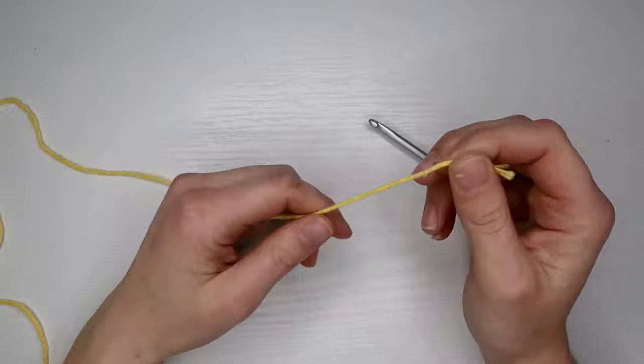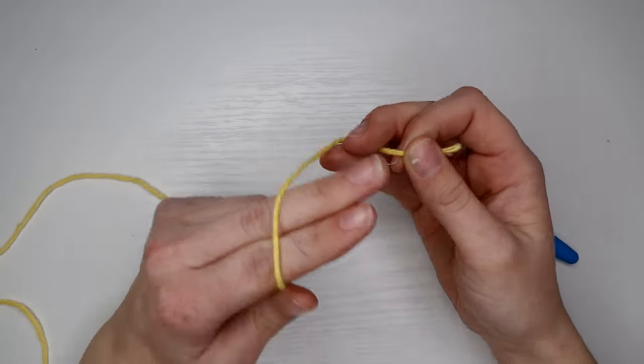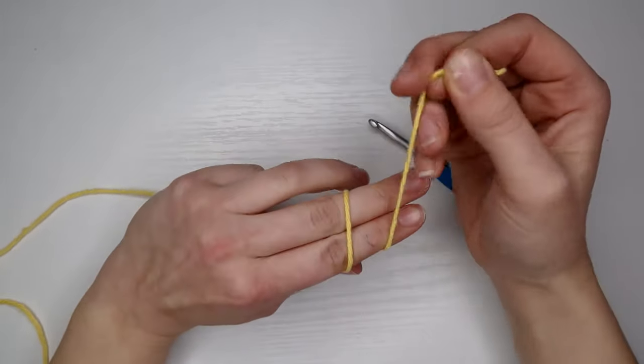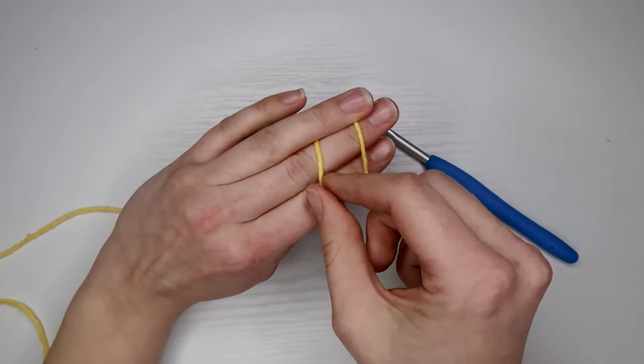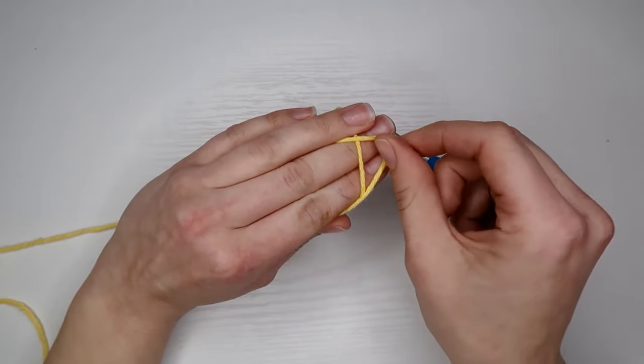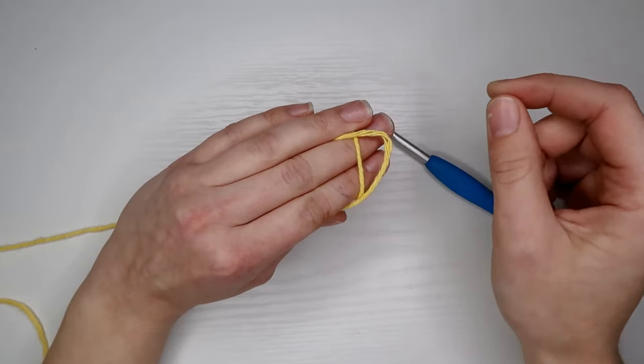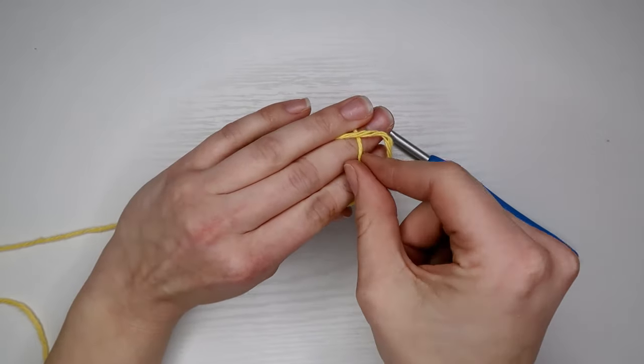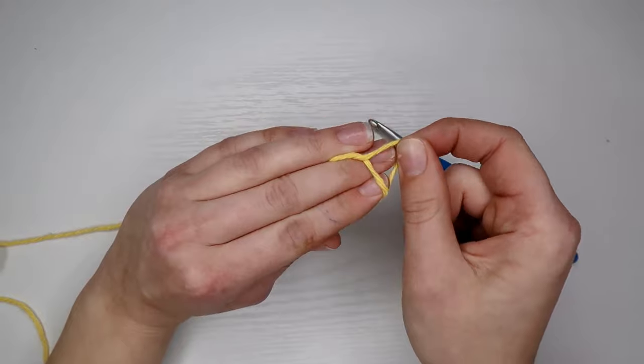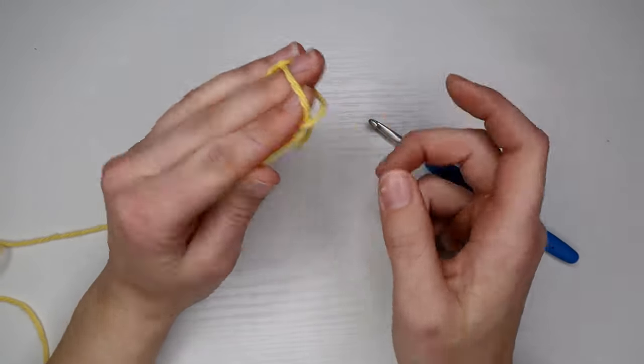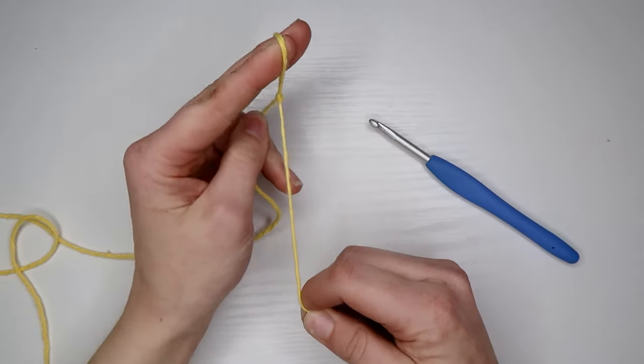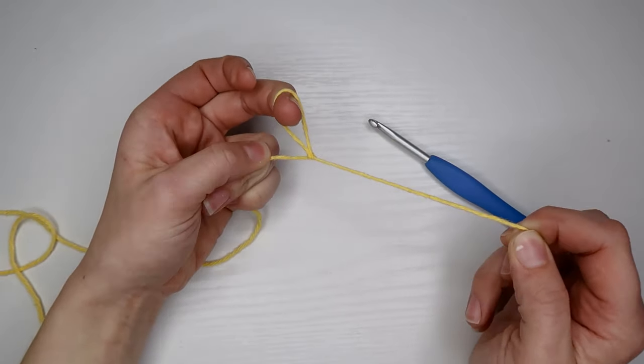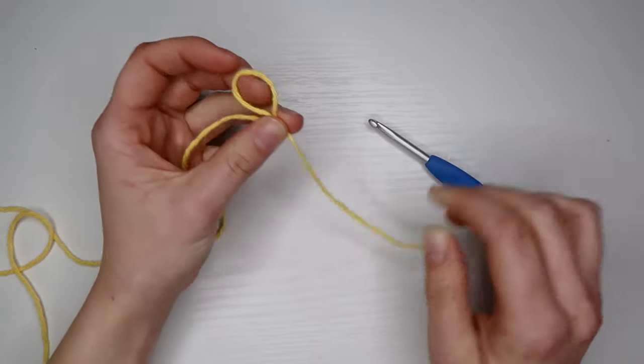The first thing we're going to do is make a slip stitch. I'm going to wrap my yarn around my two fingers twice, hold that down and take the back one, pull it over the front but not all the way over your fingers. Now we're going to take this one right here and pull it all the way off your fingers but make sure this one still stays on there. We're going to take the end and pull that. You should have a little loop that is able to tighten down.